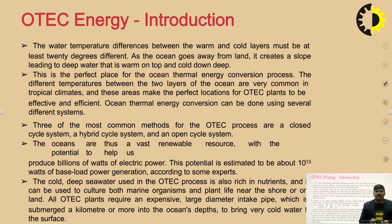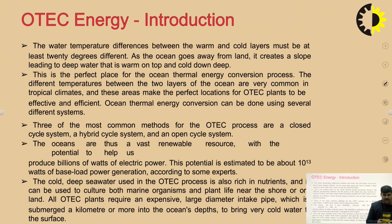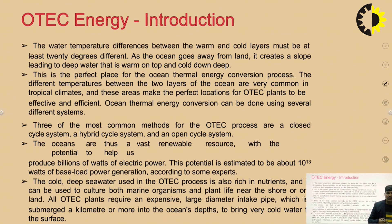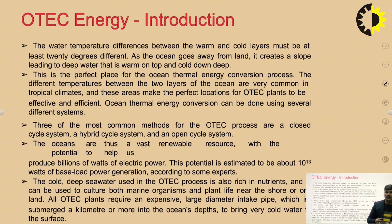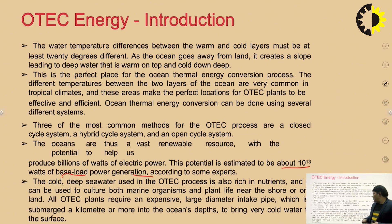Ocean thermal energy conversion can be done using several different systems. The three most common methods of the OTEC process are the closed cycle system, the hybrid cycle system, and the open cycle system. The oceans are a vast renewable resource with the potential to produce billions of watts of electricity. The potential is estimated to be about 10 to the power of 13 watts of base load power generation, according to some experts.